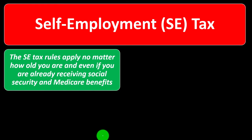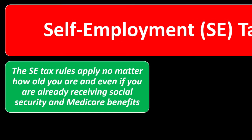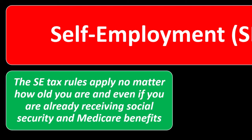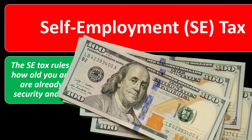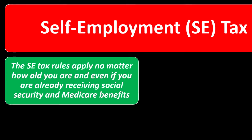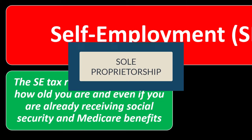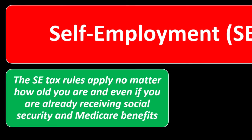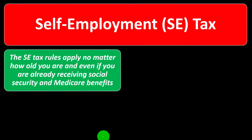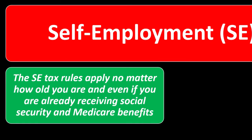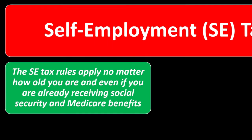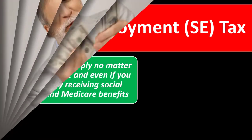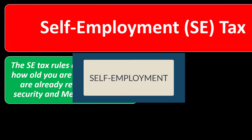Self-employment tax, SE tax — the SE tax rules apply no matter how old you are, and even if you are already receiving Social Security and Medicare benefits. When you think about these benefit programs, you think about putting money in during your working years, either through W-2 wages withheld or from paying self-employment tax as a sole proprietor. Then at retirement age, we might receive benefits from them — for example, Social Security. So if you're still earning income subject to self-employment, you still have to pay in, even though you're already receiving benefits.